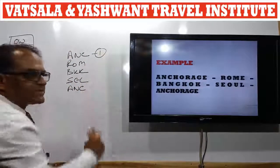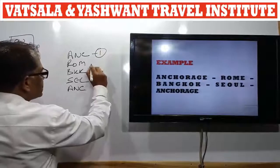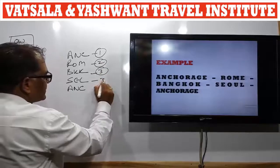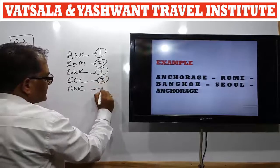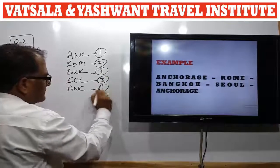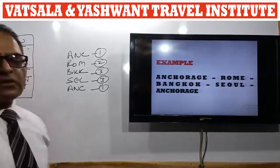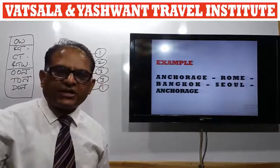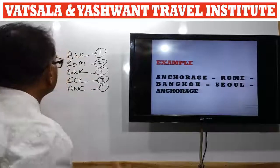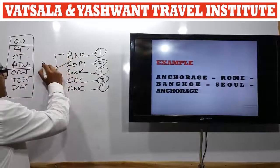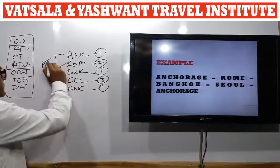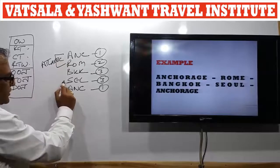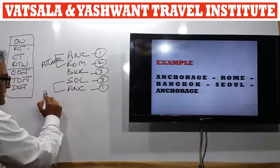Anchorage is in USA, Area 1. Rome is in Italy, Area 2. Bangkok is in Thailand, Area 3. Seoul is in Korea, Area 3. Anchorage is in USA, Area 1. In this journey all three areas are involved. From Anchorage to Rome, the passenger is crossing the Atlantic Ocean.